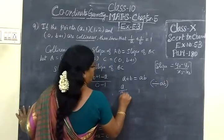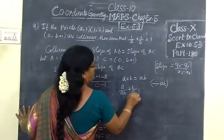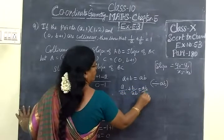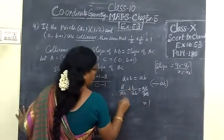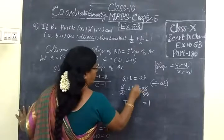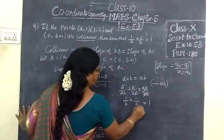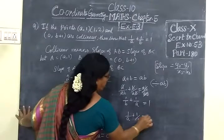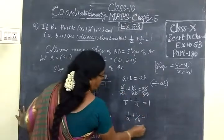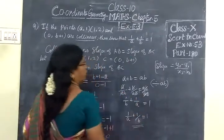So A by AB, B by AB, AB by AB. AB by AB you get 1. A cancels, 1 by B. B cancels, 1 by A. So 1 by A plus 1 by B equal to 1. This is the required condition that has been proved.